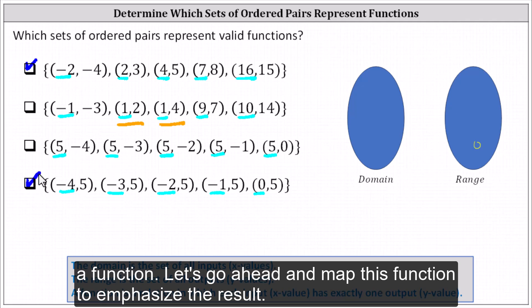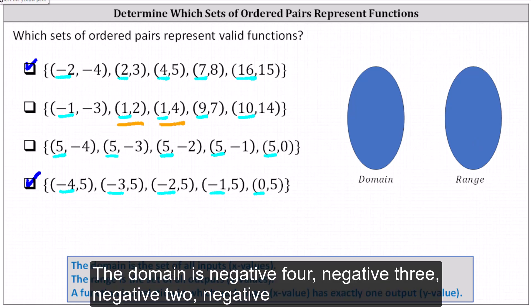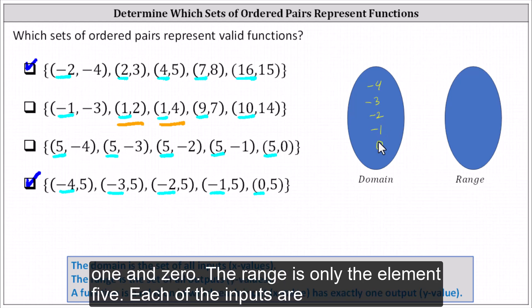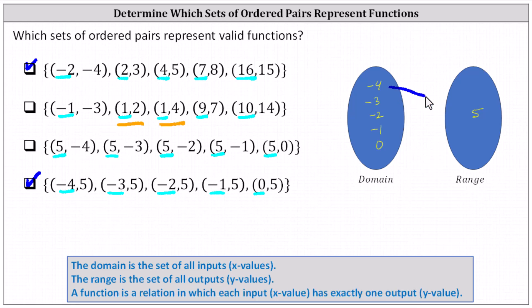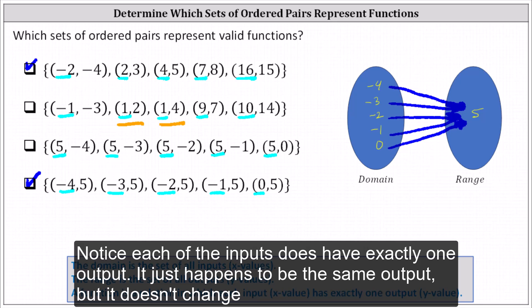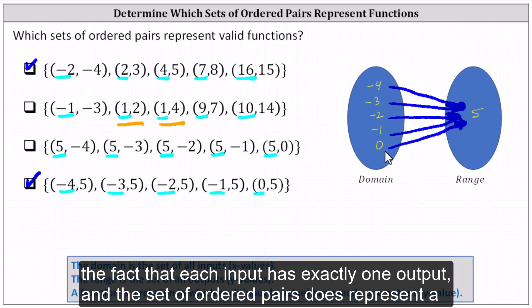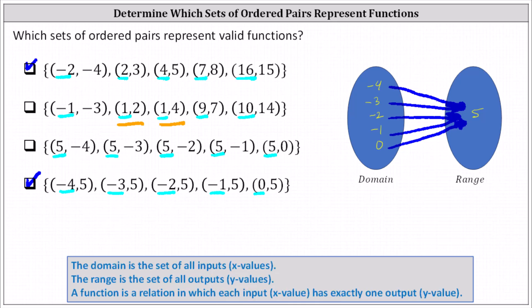Let's go ahead and map this function to emphasize the result. The domain is negative four, negative three, negative two, negative one, and zero. The range is only the element five. Each of the inputs are mapped to positive five. Notice each of the inputs does have exactly one output — it just happens to be the same output — but it doesn't change the fact that each input has exactly one output, and the set of ordered pairs does represent a valid function. I hope you found this helpful.